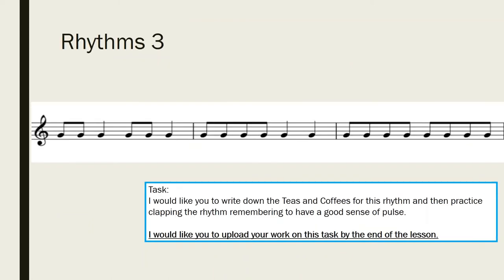After you've done that, I'd like you to have a go at writing down the teas and coffees for the long rhythm shown. Write it on the same page as the previous task. I'll give you the first bar: tea, coffee, tea, coffee, tea. Once you've written it down, have a go at clapping this rhythm from start to finish with a really good sense of pulse. It doesn't matter how fast or slow you go, as long as the tempo doesn't change — maybe start slow and work your way up.